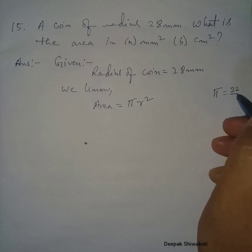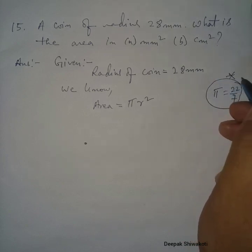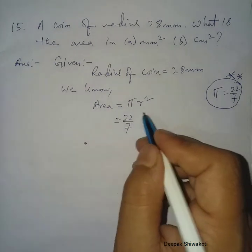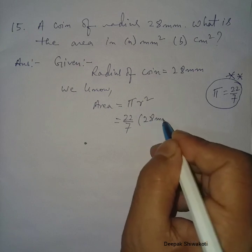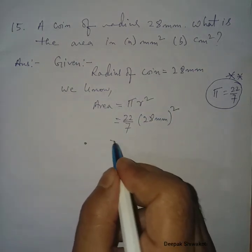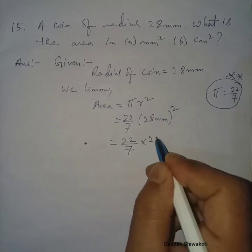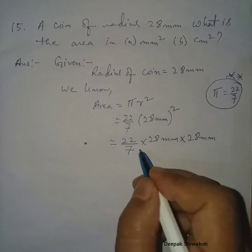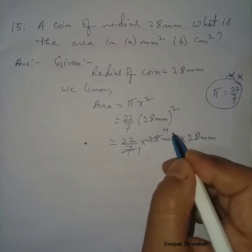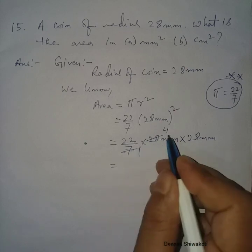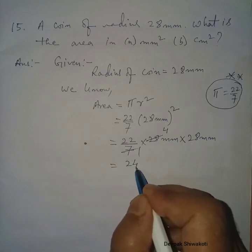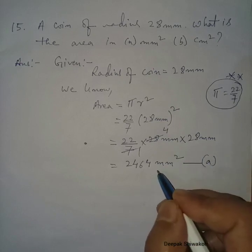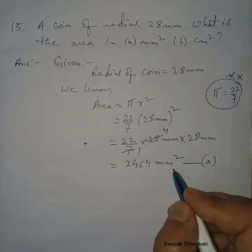The value of pi is 22 by 7 — remember this. Putting the value: area equals 22 by 7 into 28 millimeter squared. Expanding: 22 by 7 into 28 into 28. 7 cancels with 28, giving 4, so 22 into 4 into 28 equals 2464 millimeter square. This is the area of the coin in millimeter square for part A.